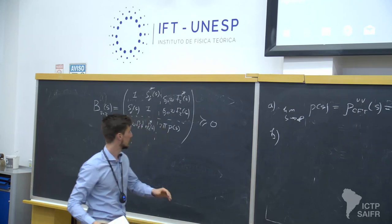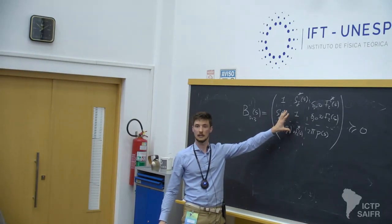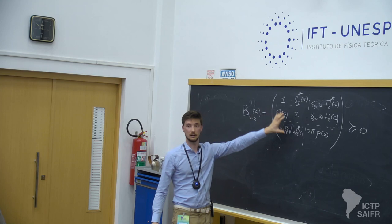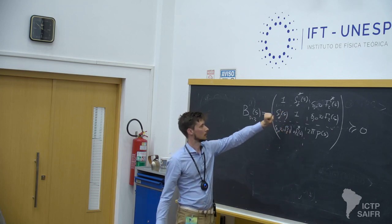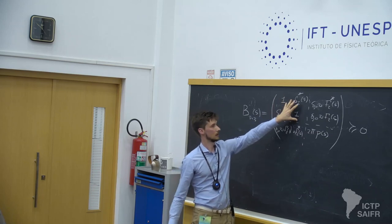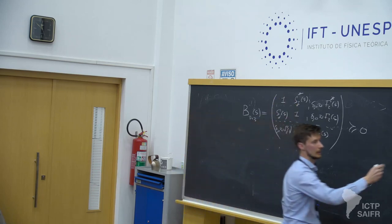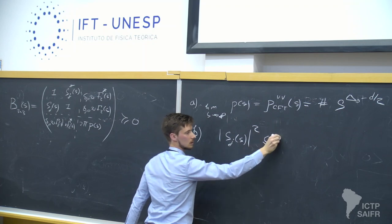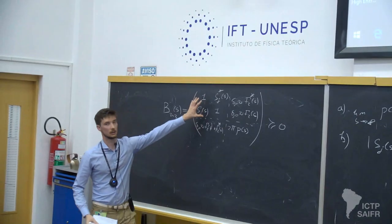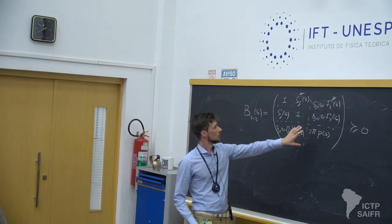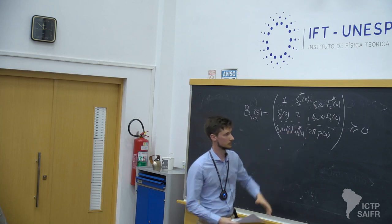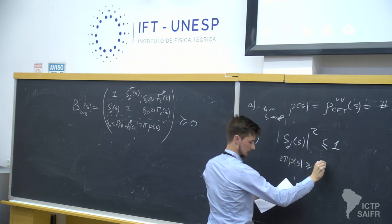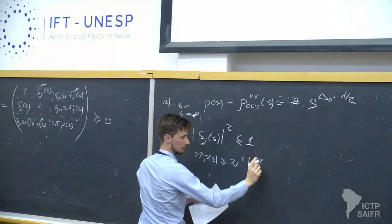Second, I apply the Sylvester criterion for the matrix to be semi-positive definite. It states that all principal minors of this matrix should be non-negative. If we take a look at the (1,1)-(2,2) minor, it leads to the standard condition that the partial wave amplitude squared should be less than or equal to 1. Similarly the minor involving (3,3) gives the constraint that 2pi rho (spectral density) is greater than or equal to omega squared times the form factor F_2 squared.